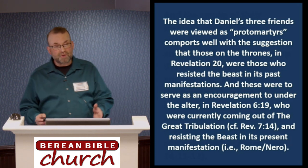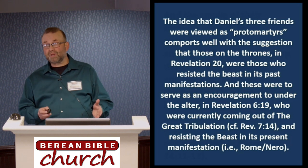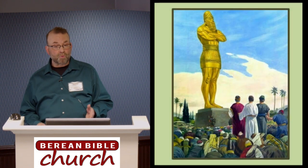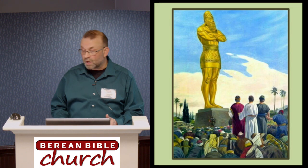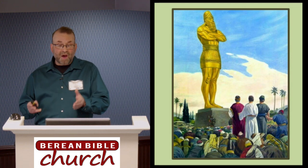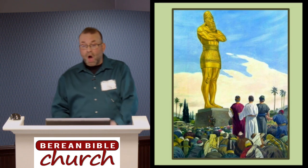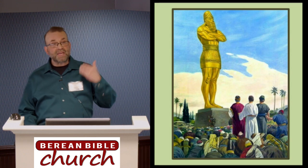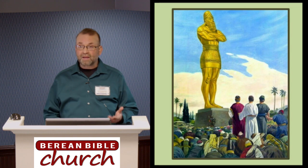The idea of Daniel's three friends as proto-martyrs comports well with the suggestion that those on the thrones in Revelation 20 were those who resisted the beast in its past manifestations. And these were to serve as an encouragement to those who were under the altar in Revelation 6, who were currently coming out of the great tribulation and resisting the beast in its present manifestation — namely Nero or Rome. The proto-martyrs — the ones on the thrones in Revelation 20, like Shadrach, Meshach, and Abednego — continued to let God's law be the sign on their hands and foreheads, the sign that governed their thoughts and actions as they resisted the beast then embodied in the Babylonian empire.